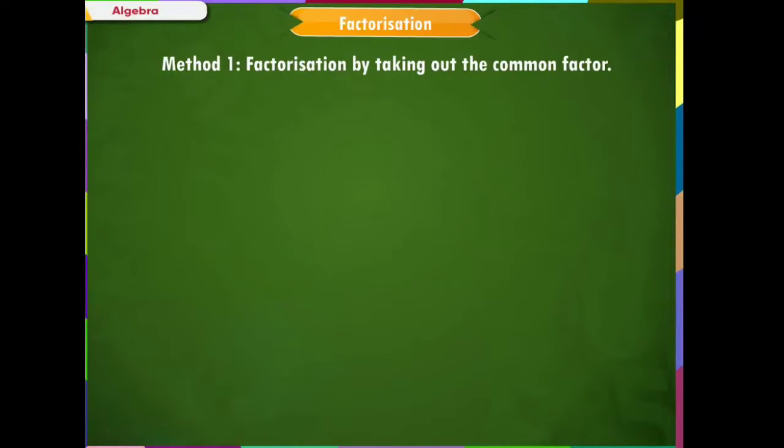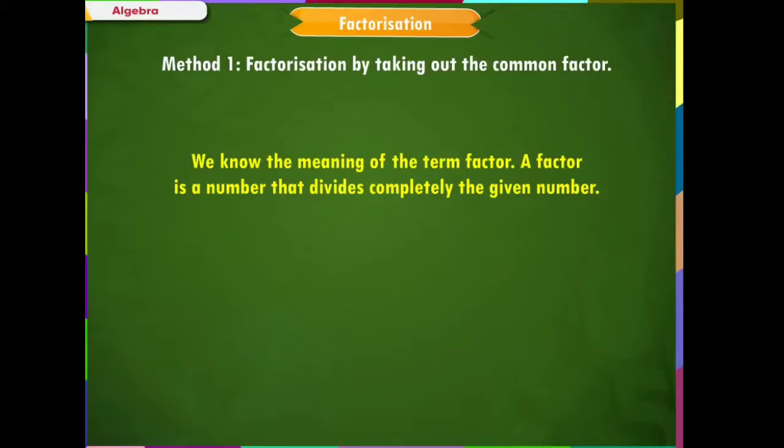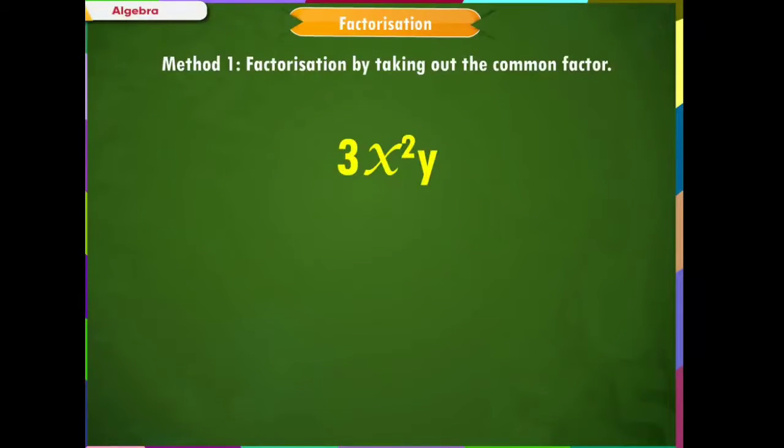Method 1: Factorization by taking out the common factor. We know the meaning of the term factor. A factor is a number that divides completely the given number. For example, 3x²y is a number.